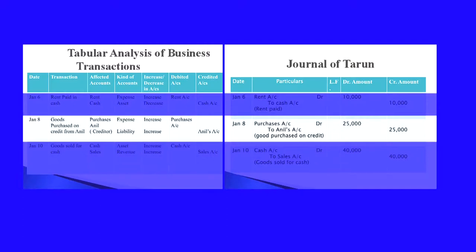Moving to January 8th: goods purchased on credit from Annual. The two affected accounts are purchases and Annual — Annual is a creditor. Purchases being an expense will come under expense account; Annual, the creditor, can be considered as a liability. Purchases increase as goods are purchased on credit, so purchases account is debited. Annual is a liability and it is increasing because we did not make payment on that date, so Annual's account is credited. Therefore, purchases account is debited and Annual's account is credited.